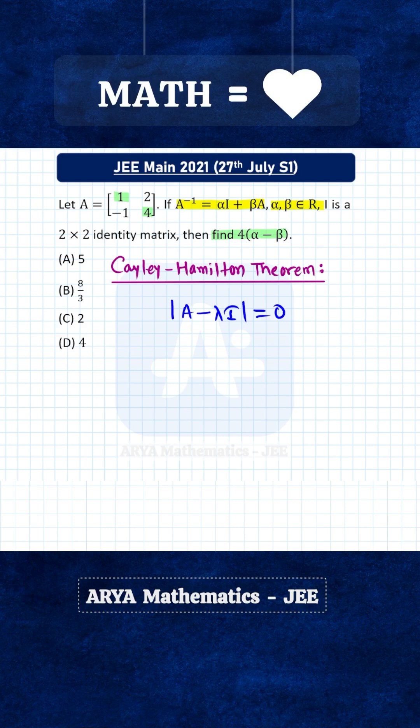However, for a 2×2 matrix, there is a direct formula to get the characteristic equation: λ² - trace(A)·λ + det(A) = 0.